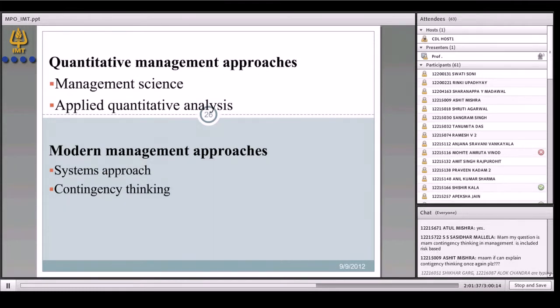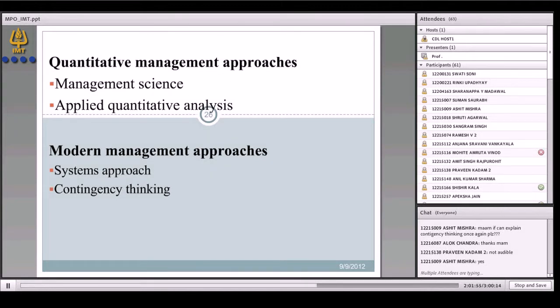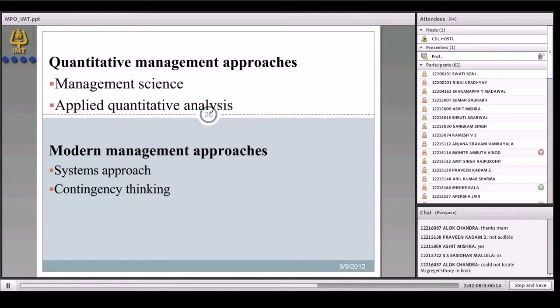Ashad, basically contingency thinking - if you look at the evolution of management, we're talking about various researchers coming up and trying to tell us what factors will increase productivity, what should be the focus areas, what factors should be considered to increase efficiency. Contingency thinking basically talks about there is no universal formula for any predetermined solution or to replicate a solution.